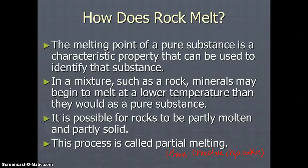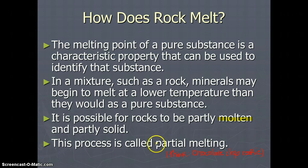Other substances have different melting points. Pure substances are going to have very different melting points because of their properties. In a mixture, such as a rock — a rock is a mixture of different pure substances called minerals — minerals may begin to melt at a lower temperature than they would as a pure substance. It is possible for rocks to be partly molten and partly solid. The term molten means liquid. This process is called partial melting.